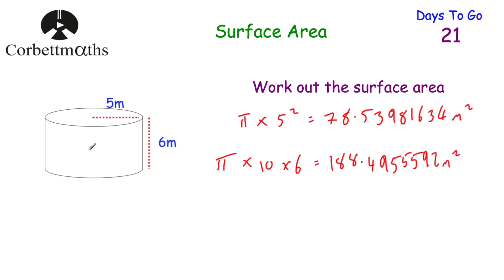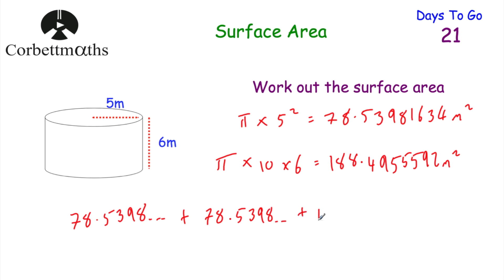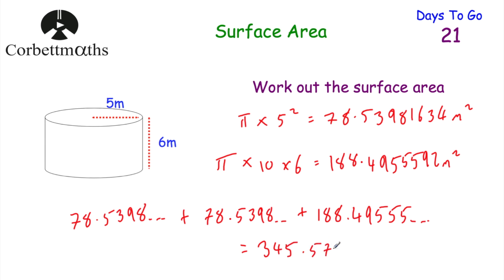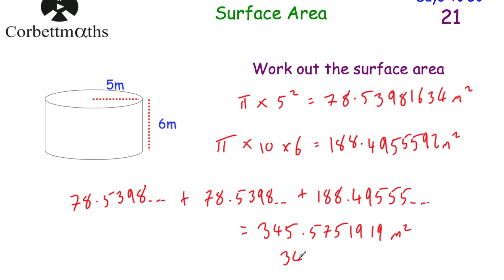That's the area of the curved face. For the total surface area, we do top + bottom + curved face: 78.5398 + 78.5398 + 188.4956 = 110π or 345.5752 metres squared. Rounded to three decimal places, that's 345.575 metres squared. That's the surface area of that cylinder to three decimal places.